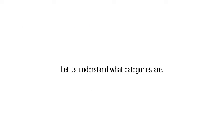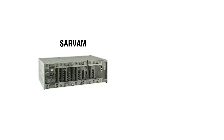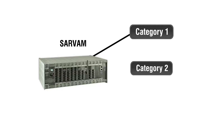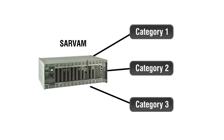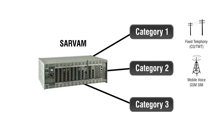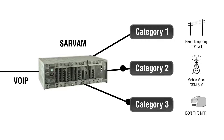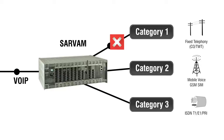Let us understand what categories are. Servum UCS has three categories: Category 1, Category 2, and Category 3. These categories can be assigned to different telecom networks or trunks. After assigning the categories, you can allow or restrict calls between two categories or between any category and VoIP.